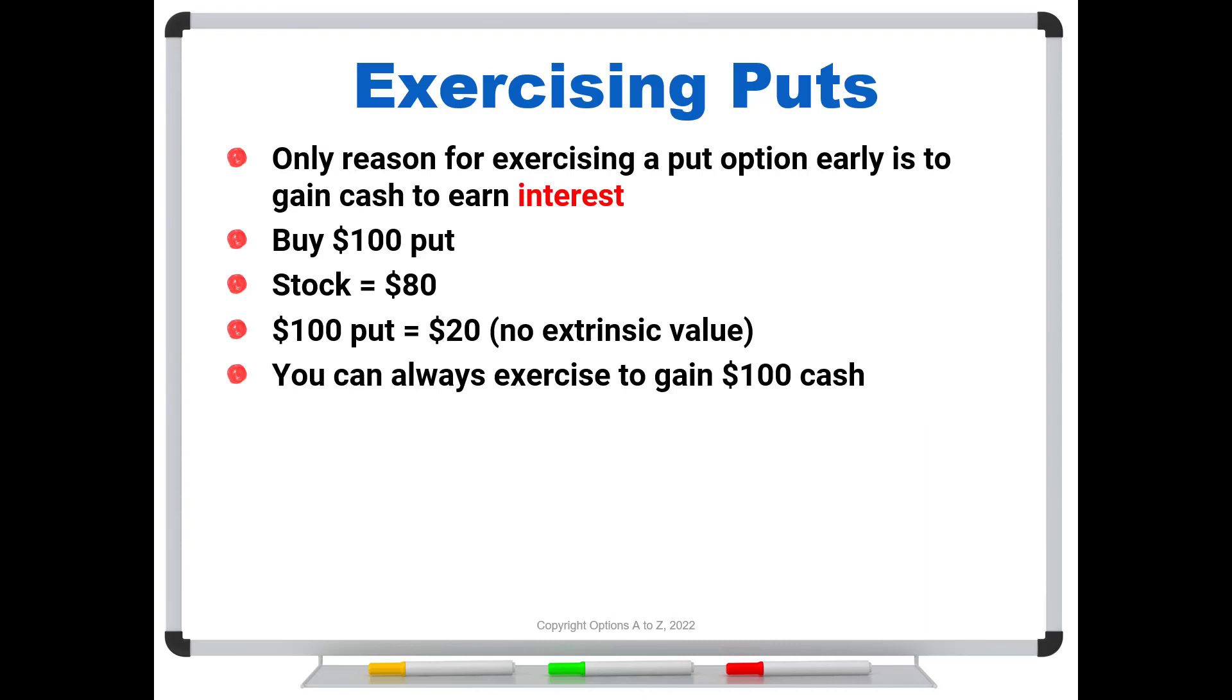You're not really getting more money by exercising early. All you're doing is getting the money in your hands early so that you can earn interest. So for example, let's say that here's our timeline and here is today, and if you exercise today, you get $100 today, you drop it in your money market and it earns interest over time, and maybe it turns out to be $101 at expiration. But had you waited until expiration to exercise, you just were going to collect $100. So you can always get the $100. You could get $100 today, you could get $100 at expiration. But if there's a chance that that stock might come back to life, you're much better off just holding on to the put.